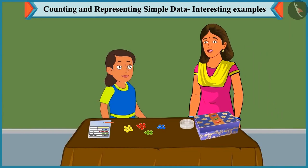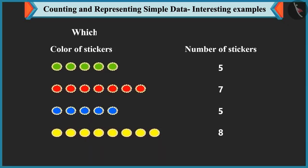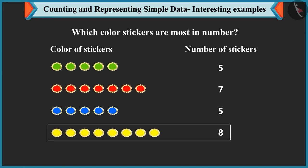Mummy praises Bubbly for representing all the sticker colors well. She asks which color stickers are most in number. Bubbly answers that yellow stickers are most in number, which is eight.